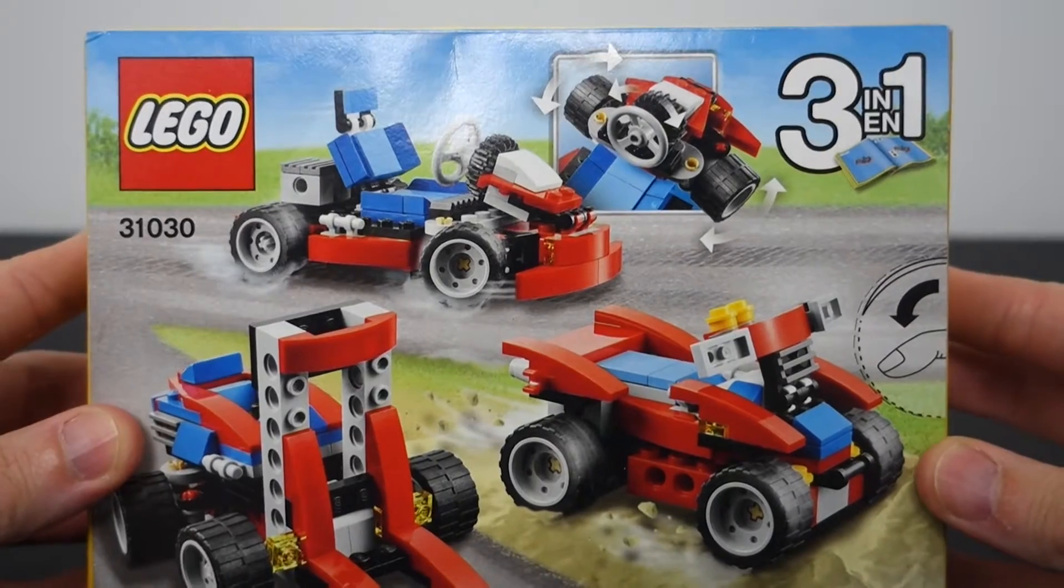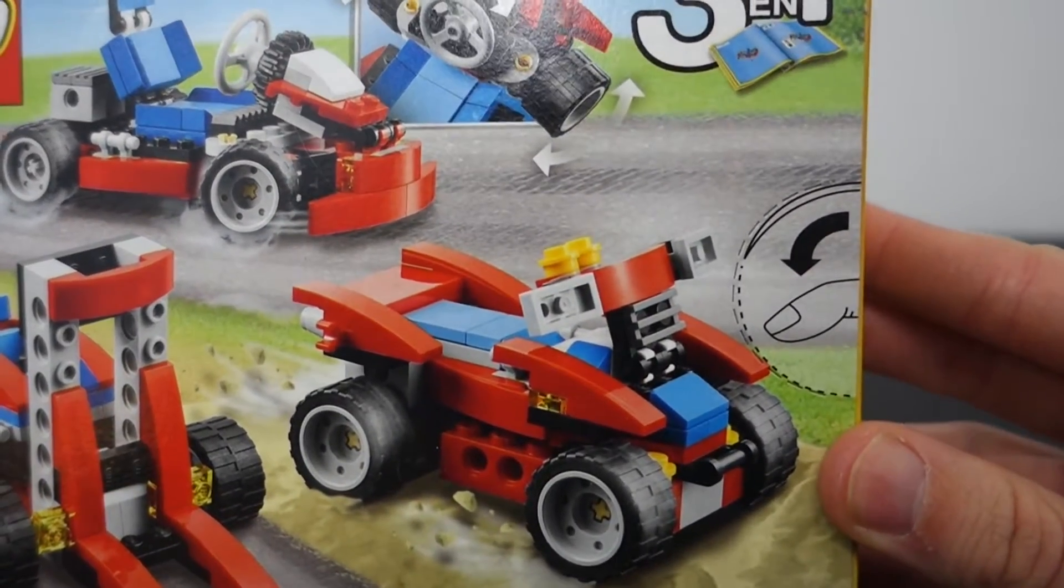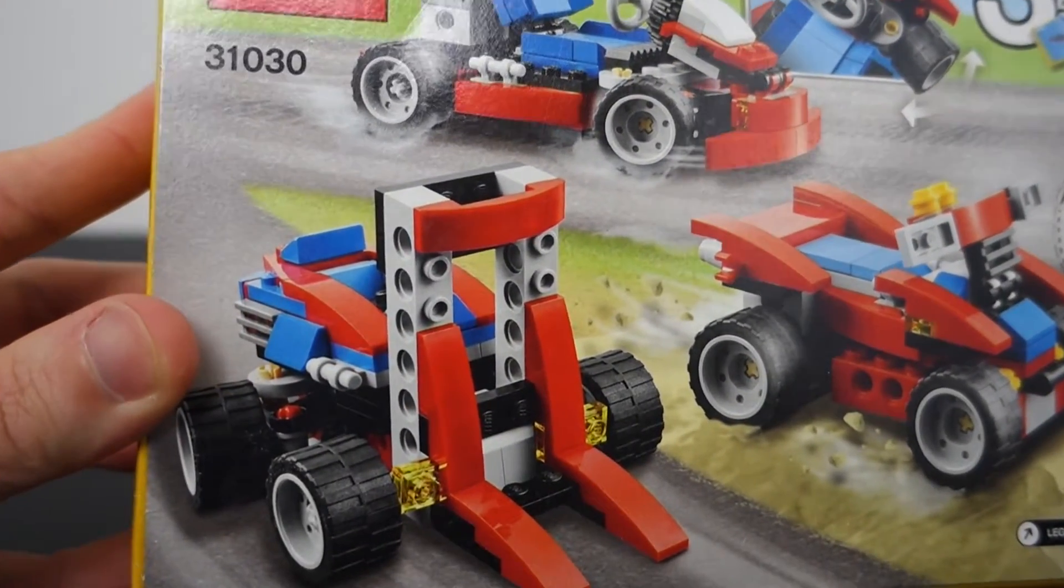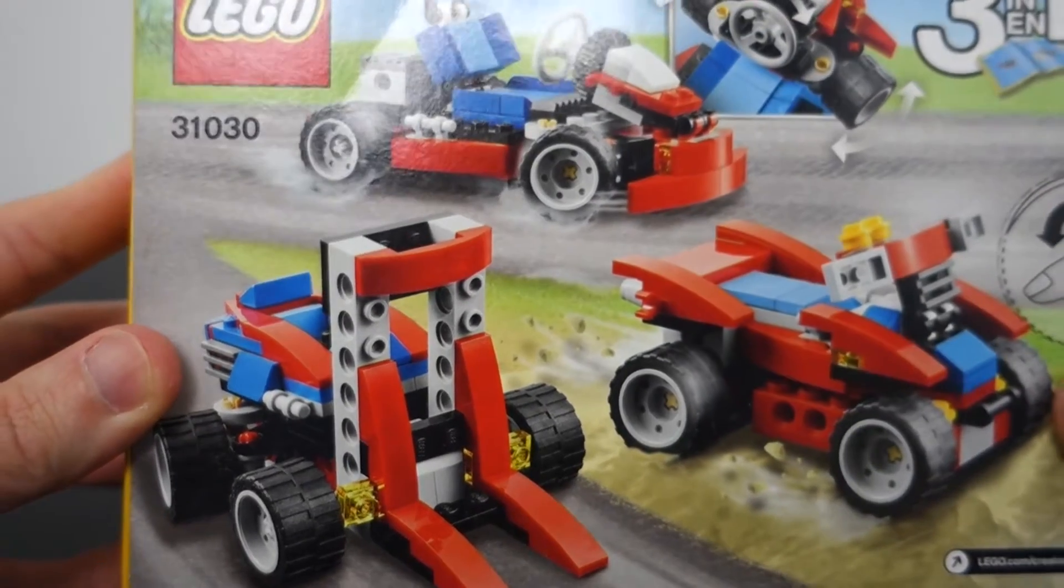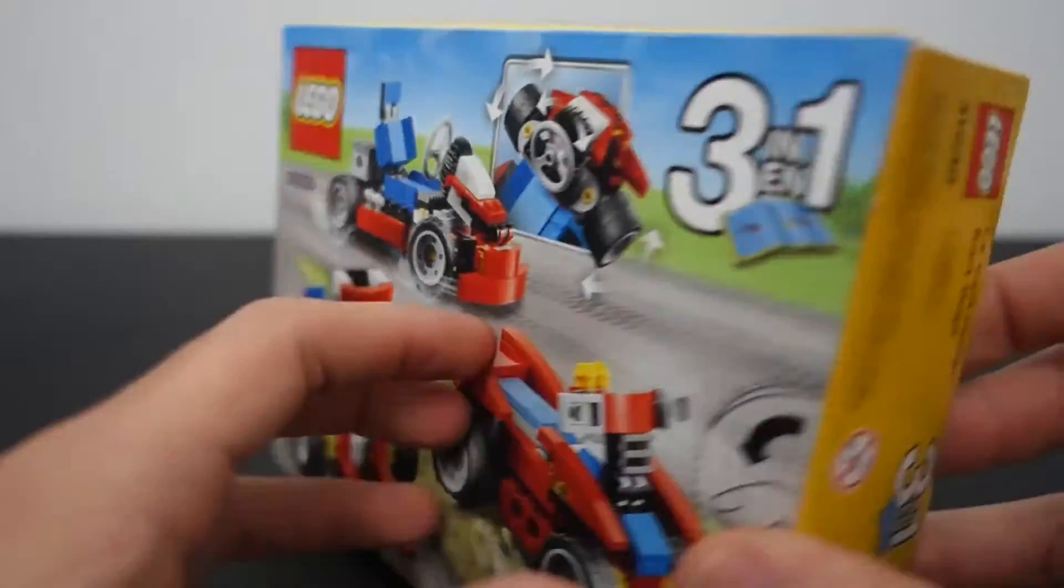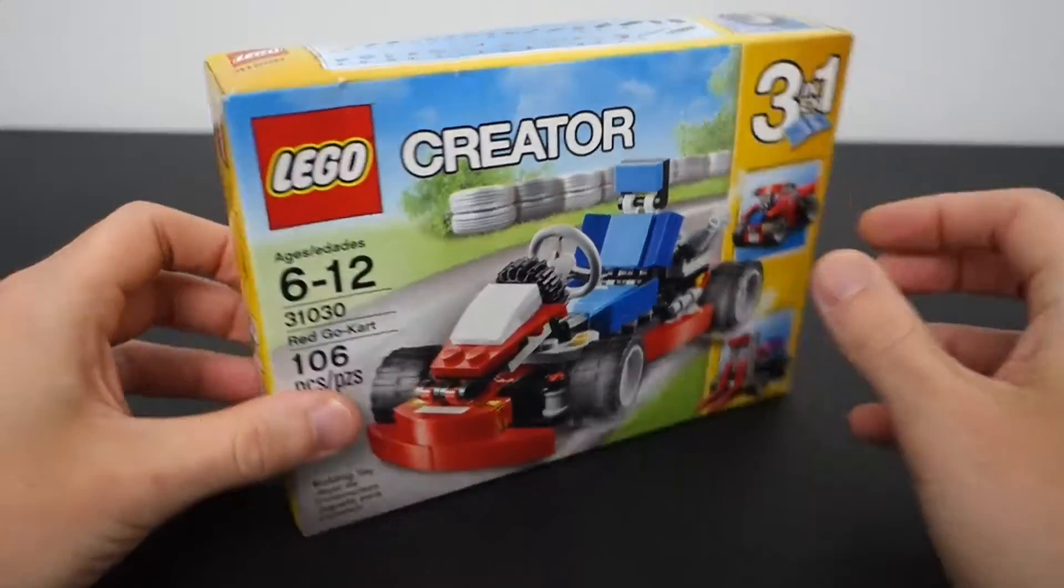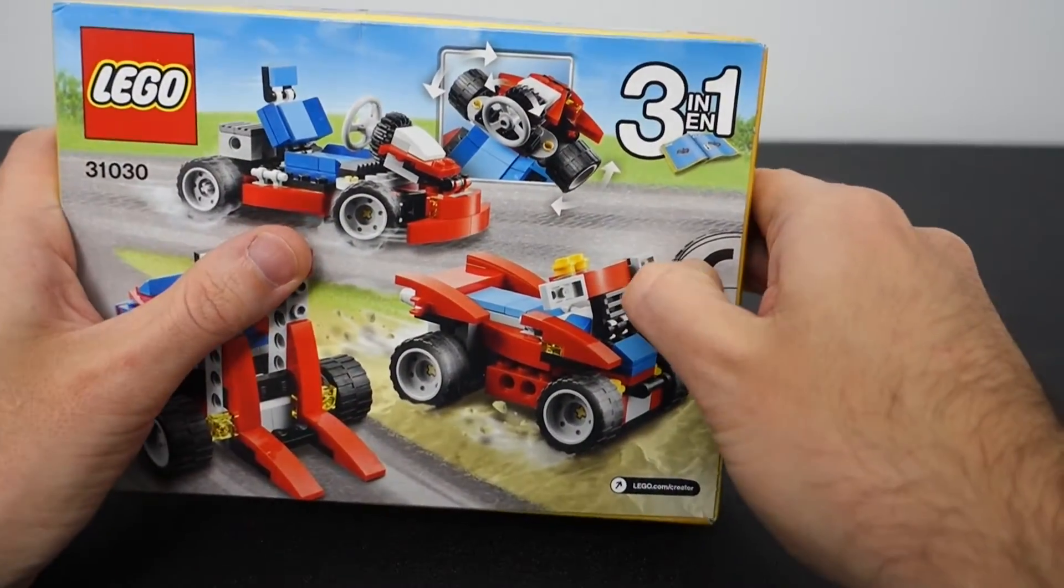If you look on the back, you can also build an ATV, which doesn't look great, and also I guess that's supposed to be a forklift, which again isn't fantastic. So in this video, I'm going to be building for you the Red Go-Kart. First things first, let's unbox this.